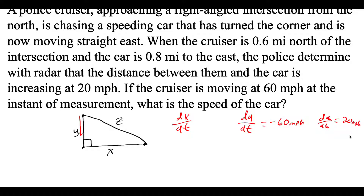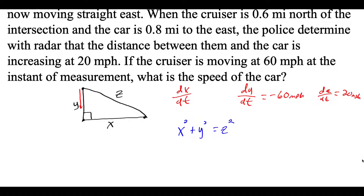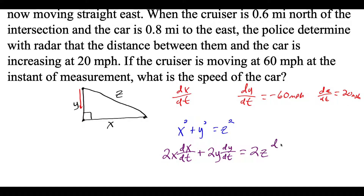Since we have the sides of a right triangle, we use the Pythagorean theorem: x² + y² = z². Differentiating implicitly with respect to t: 2x·dx/dt + 2y·dy/dt = 2z·dz/dt. Dividing everything by 2 gives: x·dx/dt + y·dy/dt = z·dz/dt.